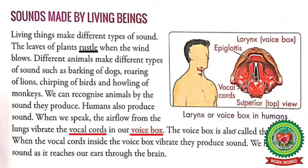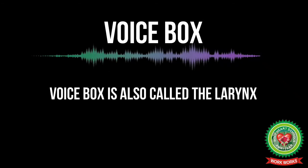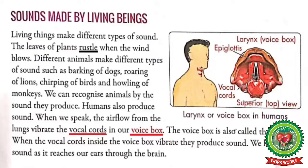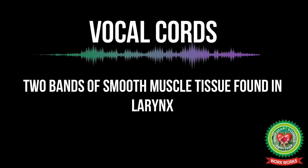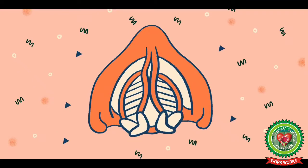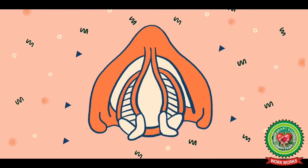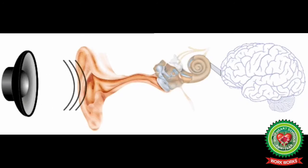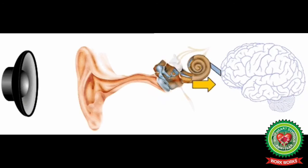Human beings also produce sound. When we speak, the airflow from the lungs vibrates the vocal cords in our voice box. The voice box is also called the larynx. Vocal cords are two bands of smooth muscle tissue found in the larynx. The vocal cords vibrate and air passes through the cords from the lungs to produce the sound of your voice, which we hear as it reaches our ears through the brain.